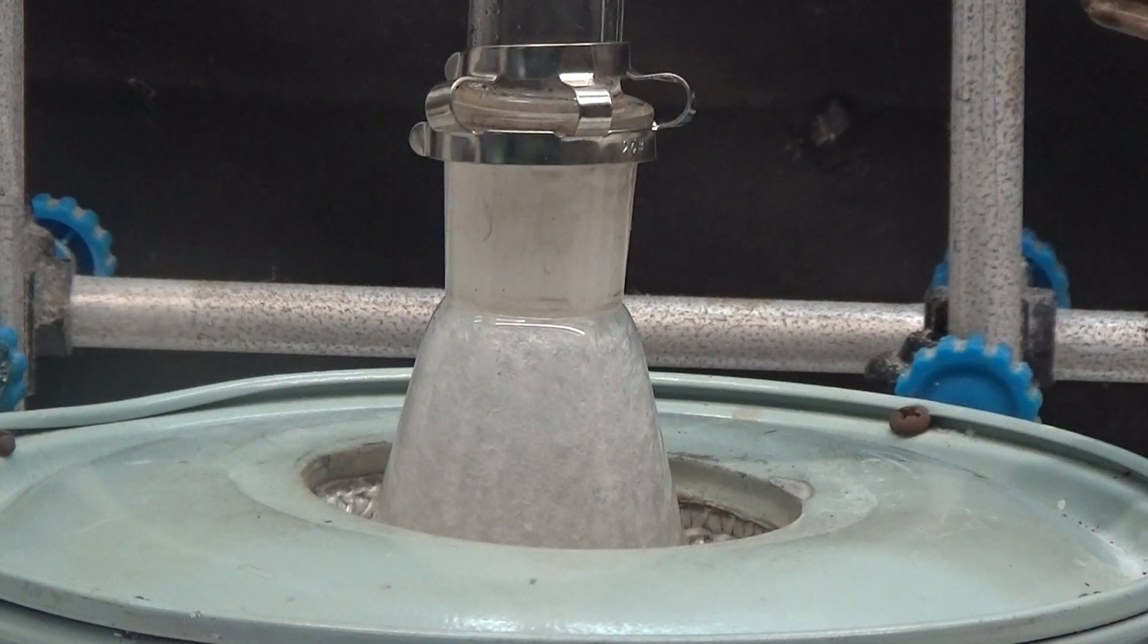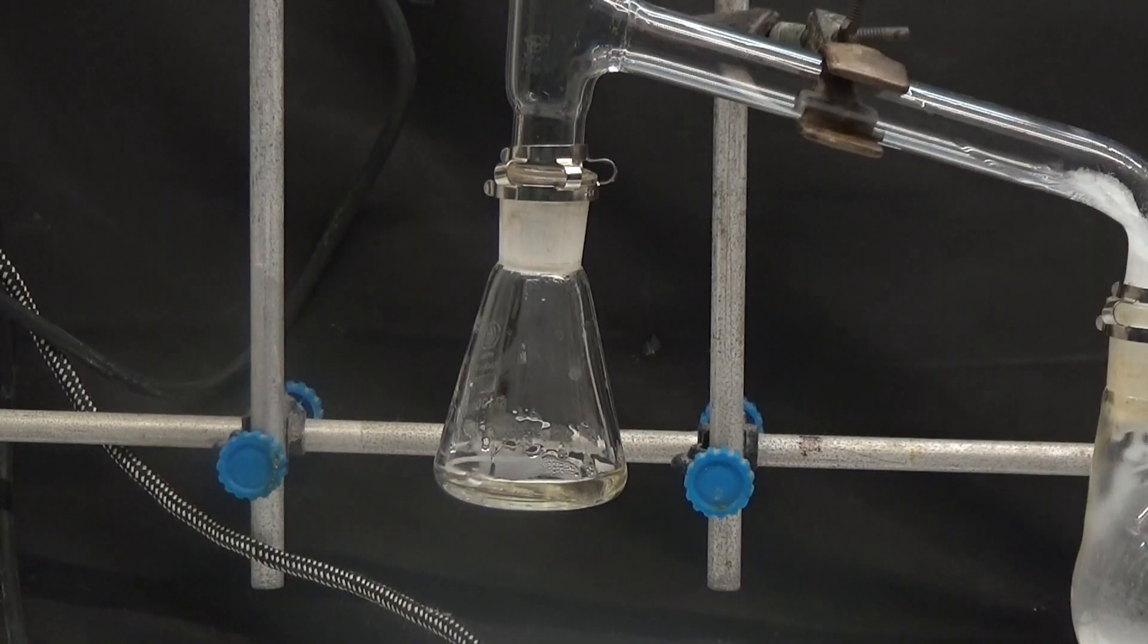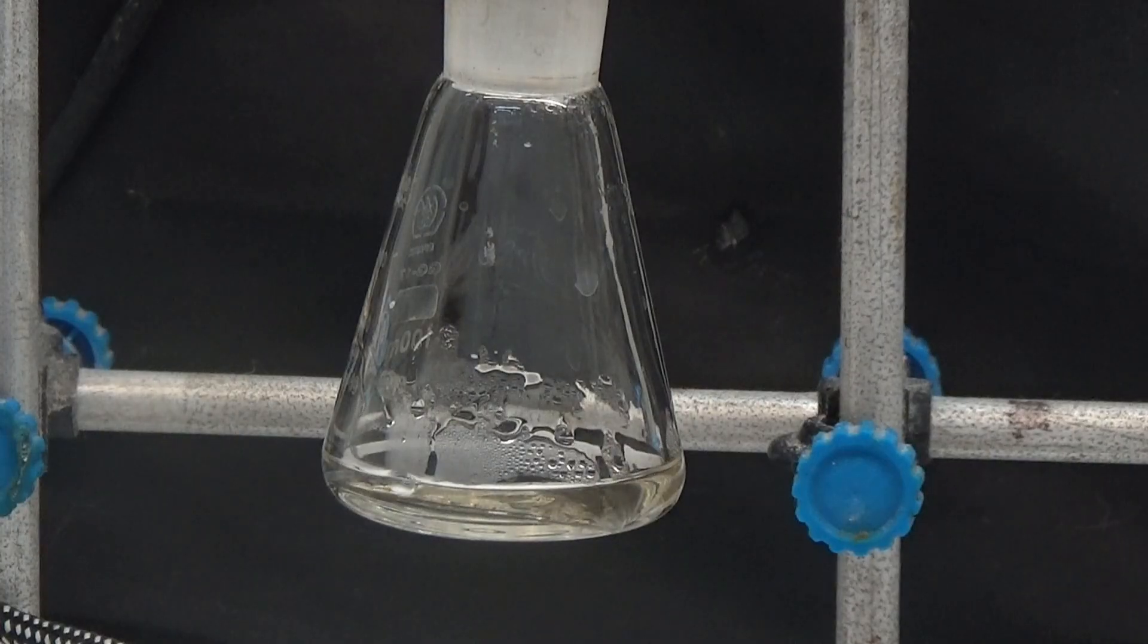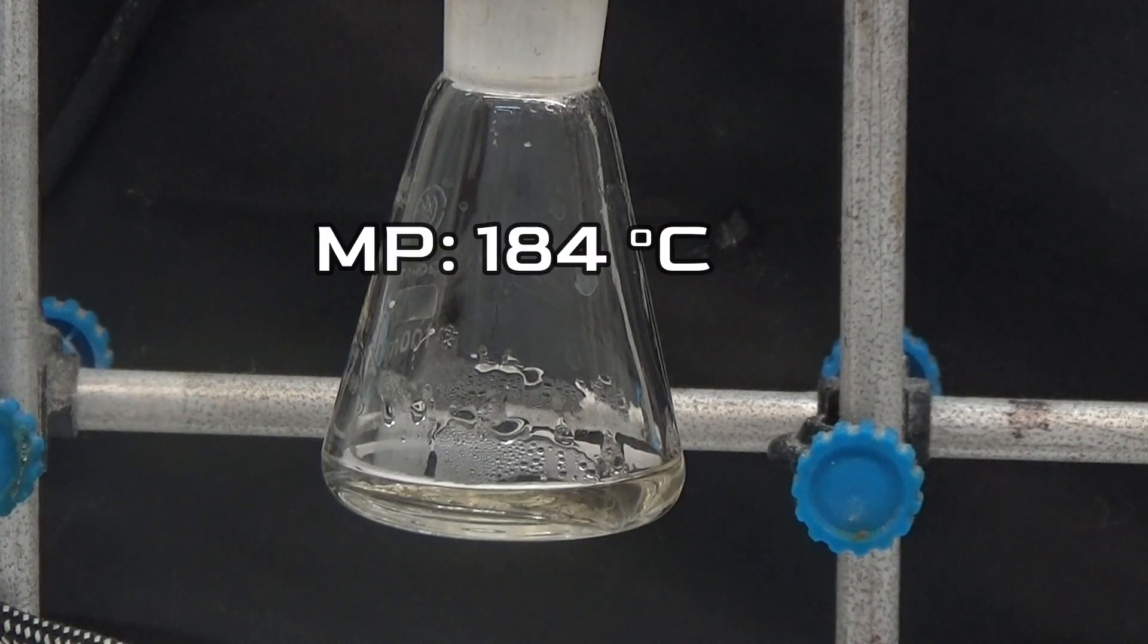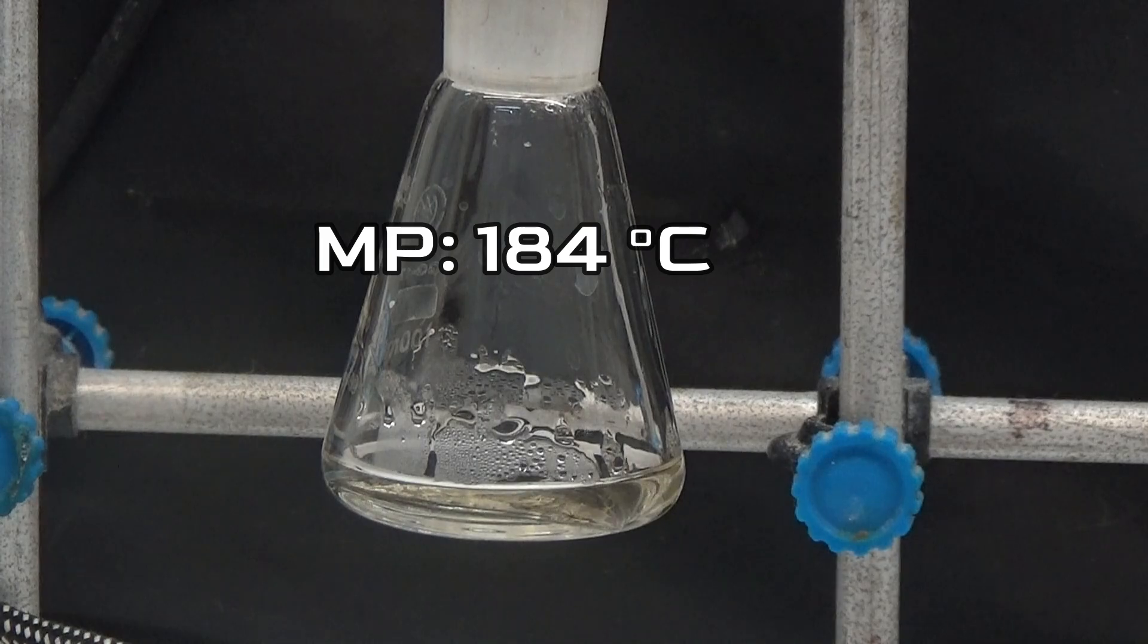We heat the flask with a heat source capable of producing more than 250 degrees. At a temperature between 180 and 200 degrees, the acid has completely melted. Succinic acid has a melting point of 184 degrees.